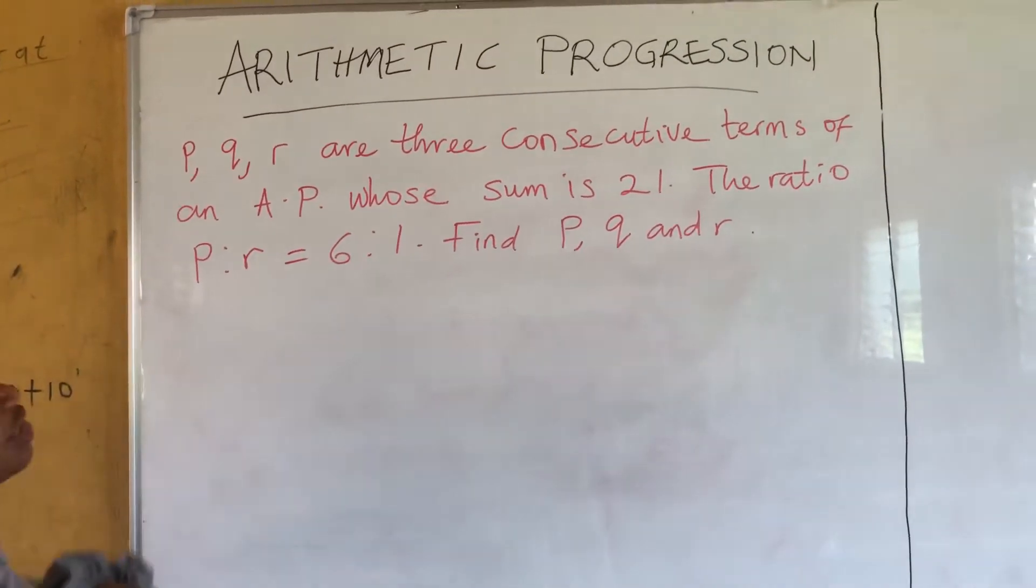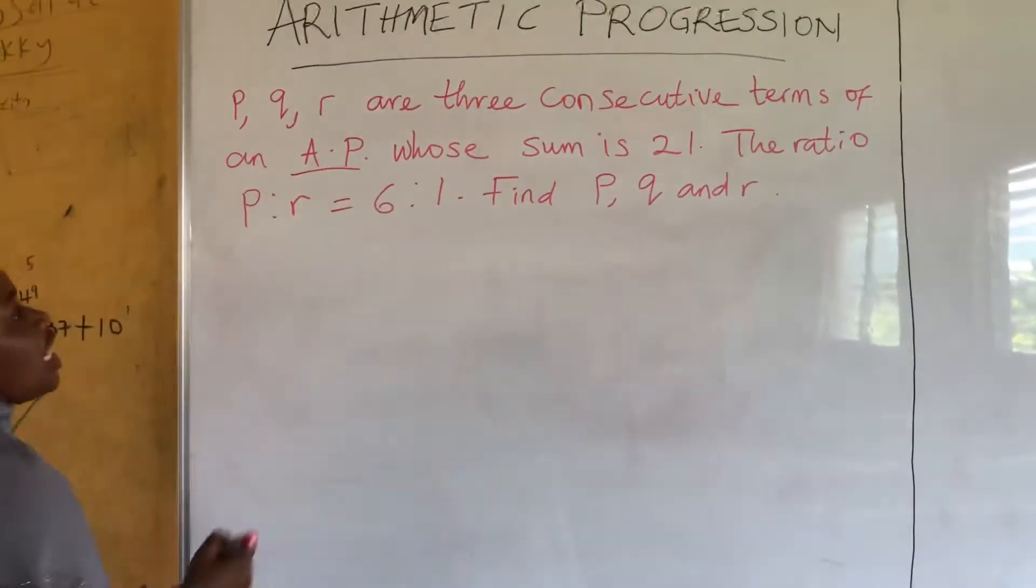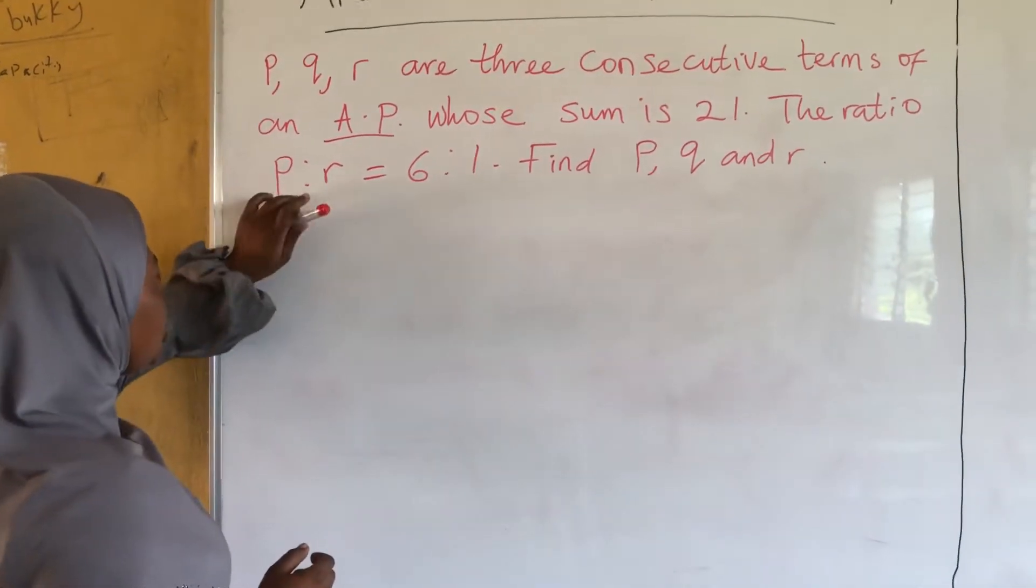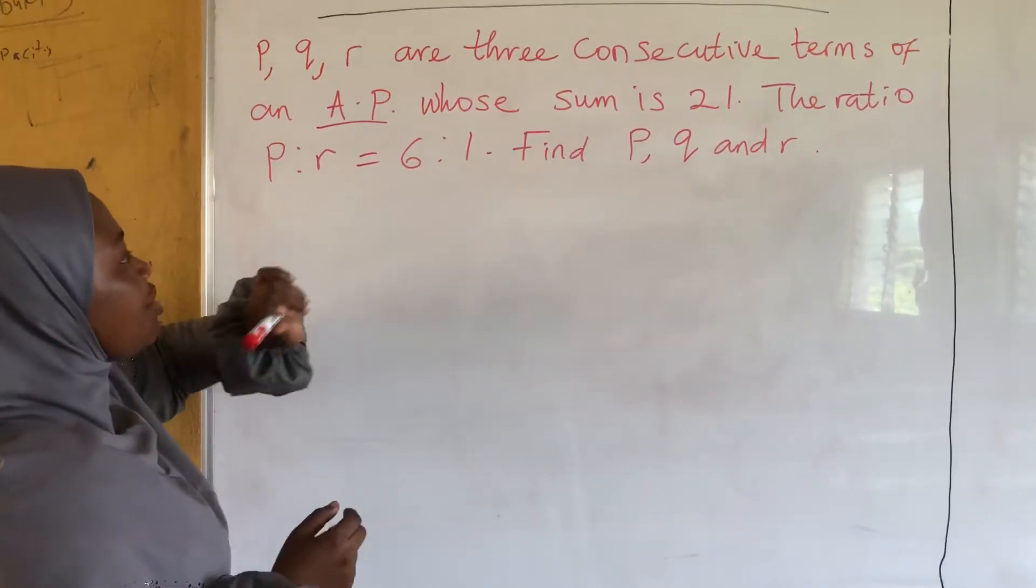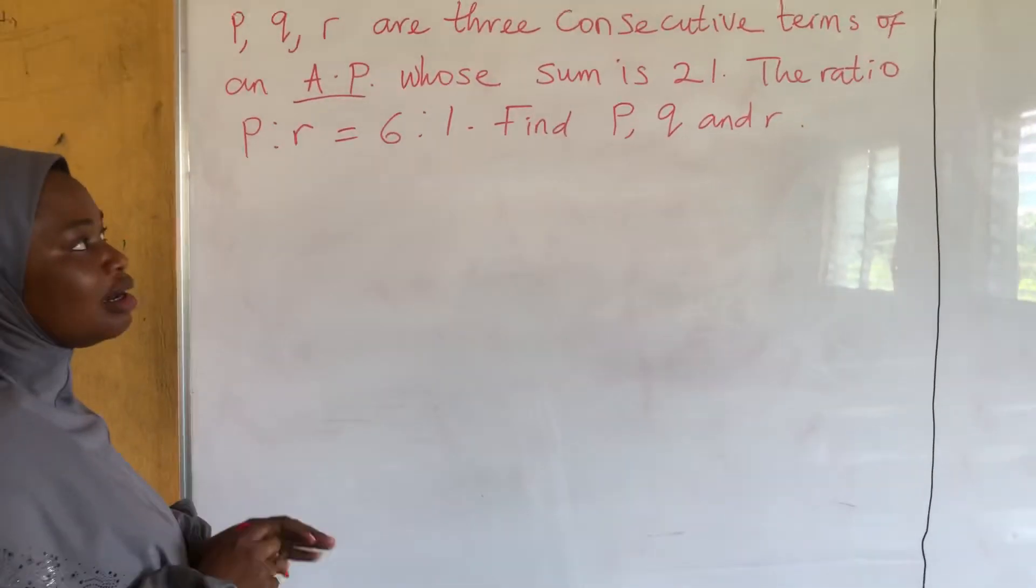P, Q, R are three consecutive terms of an AP whose sum is 21. The ratio P:R is equal to 6:1. Find P, Q, and R.